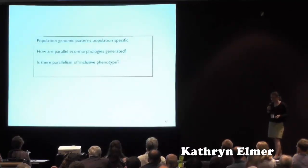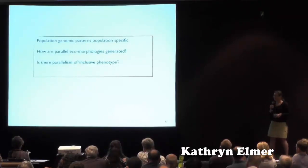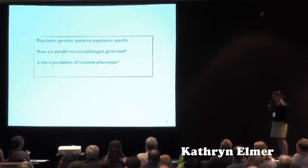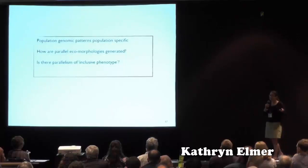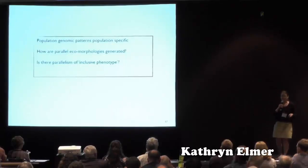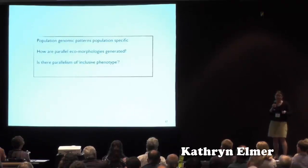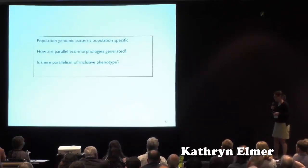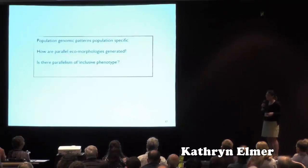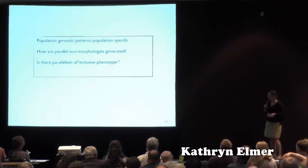We find that these population genomic patterns are extremely population-specific. At this geographic scale, we thought we would really find loci of very strong effect generating these ecomorphs. I was surprised at the level of population specificity even among neighboring lakes in Scotland. So we then asked: how can these very parallel ecomorphologies be generated? Is there parallelism of something more than just ecomorphology — what I call the inclusive phenotype — including growth rate, swimming performance, and many different aspects beyond just linear measures of the head?